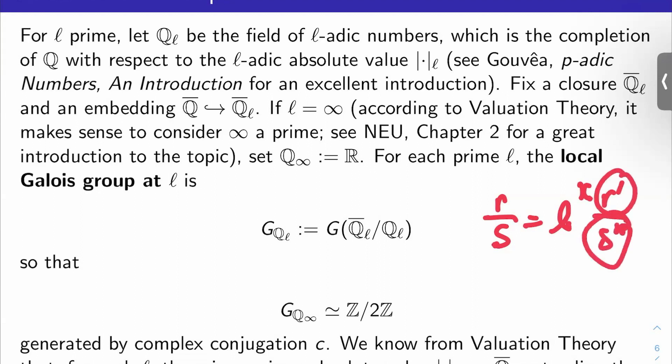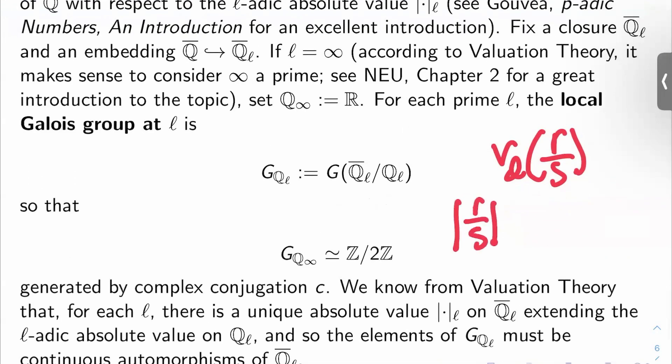leaving you with two numbers here that aren't divisible by ℓ. This number here is the ℓ-adic valuation of this number. We call that v_ℓ(r/s). And then what is the ℓ-adic absolute value of r/s? It's just ℓ to the negative valuation of r/s.